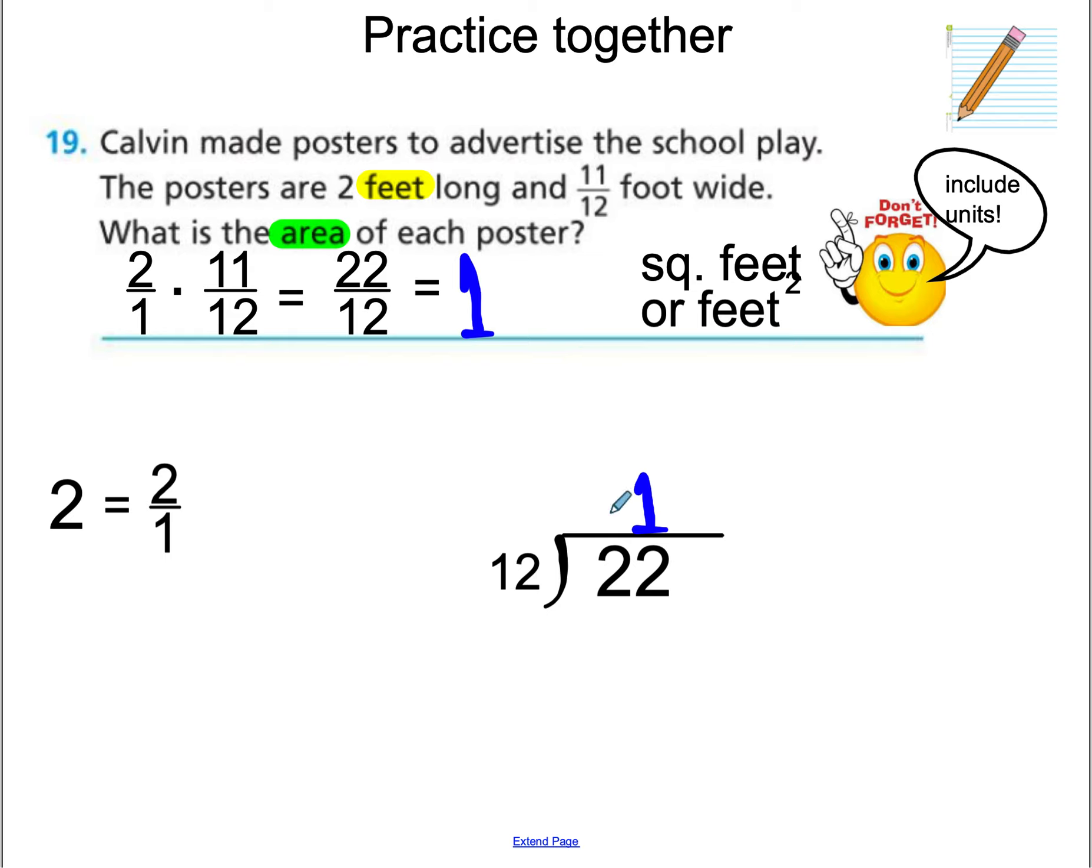Of course not. We multiply the next step, right? Remember in division, 12 times 1 gets us 12. What do we do next in division? We subtract. 22 minus 12 is 10. And remember that the remainder becomes the numerator. So this is going to be 1 foot and 10 what? Yeah, the denominator stays the same. So our answer is 22/12 square feet or 1 and 10/12 foot, square feet or feet squared. So that's our practice together.